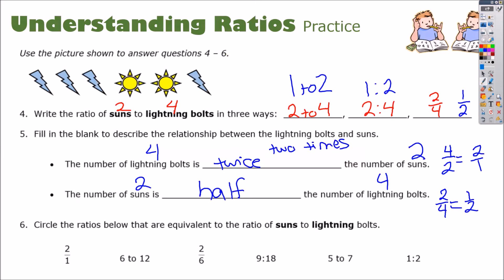And the last thing you're going to do is circle the ratios below that are equivalent to the ratio of suns to lightning. Suns, 2, lightning, 4. We just solved it over there. It was 1 half. So let's see who's correct. Is this 1 to 2? No. Is 6 half of 12? Yes. Is 2 half of 6? No. Is 9 half of 18? Yes. Is 5 half of 7? Absolutely not. And is 1 half of 2, or 1 to 2 like we just wrote? Yes. So now it's up to you to complete the rest of that worksheet. Good luck.